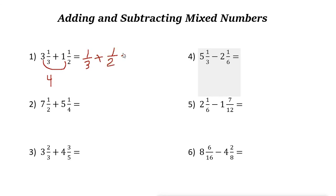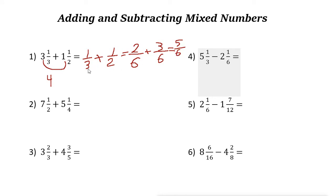We need to add one-third plus one-half. First, find a common denominator — the common denominator is six. One-third becomes two over six. One-half becomes three over six (since one times three is three). Three over six plus two over six is five over six. So the answer is four and five-sixths.